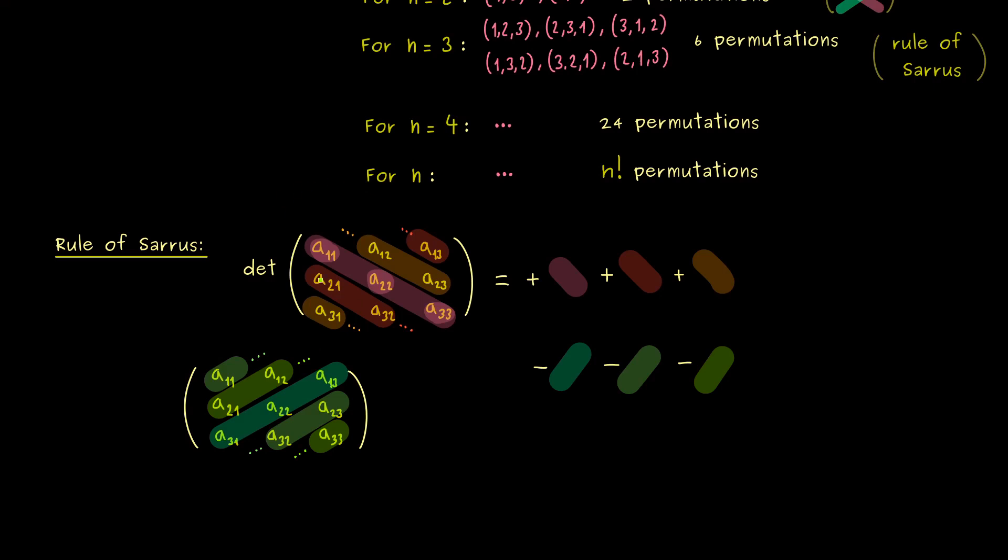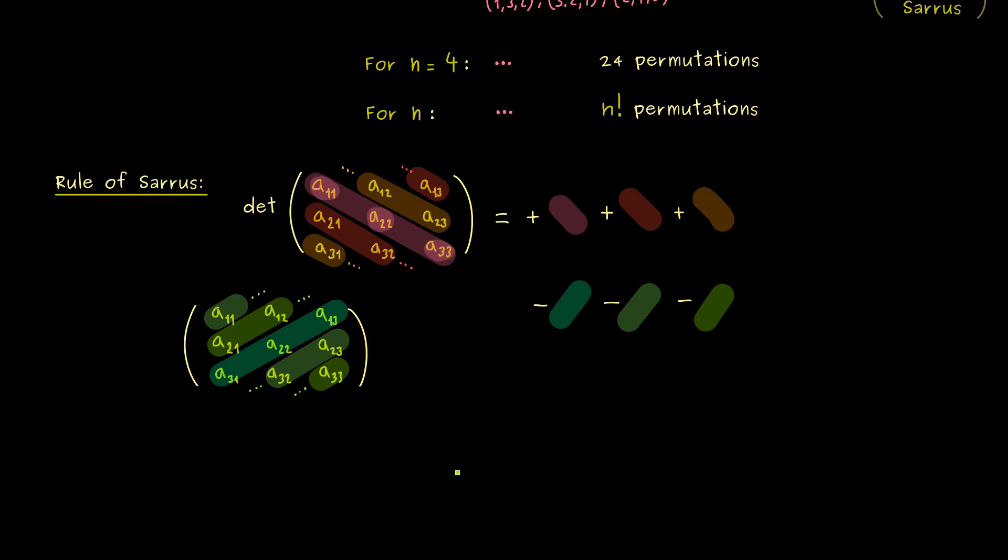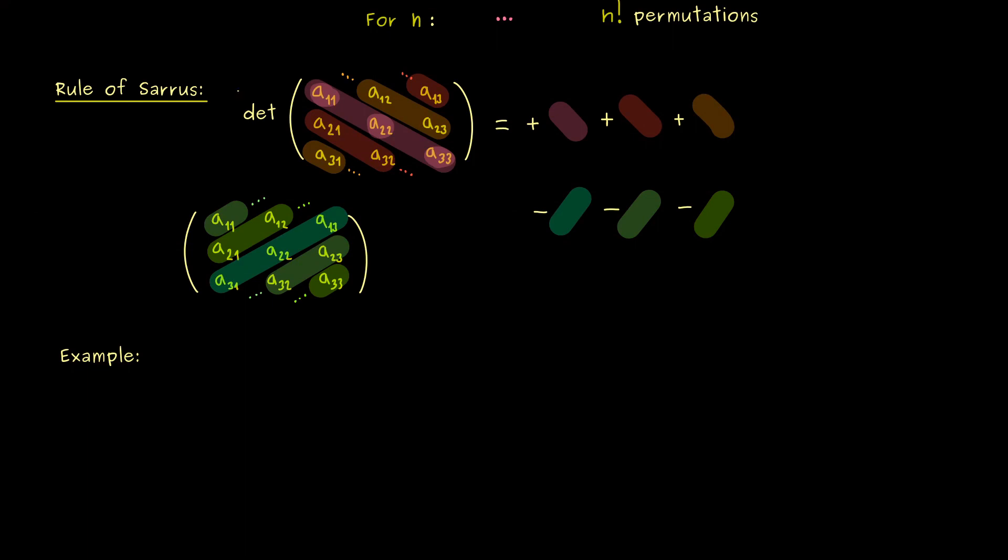It tells you how you can calculate the determinant of a 3x3 matrix without forgetting any terms. Hence, it's something that one can quickly apply on paper. In other words, a computer will not have any advantage with this additional rule, but a human has. So in order to see this, let's look at an example.